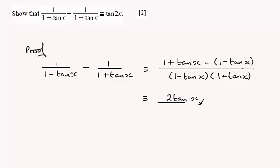2 tan x, then all divided by, and if you expand the two brackets on the bottom, you're going to get 1 times 1 which is 1, then you get plus tan x minus tan x that cancels, and then you're left with minus tan squared x. And so what we've got here is the identity for tan 2x.